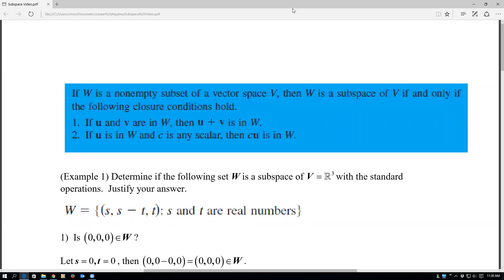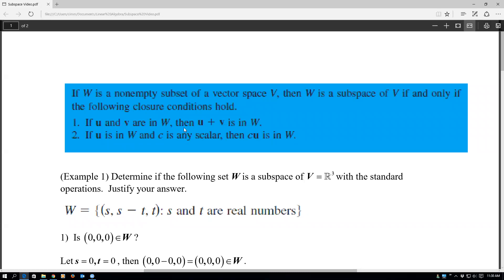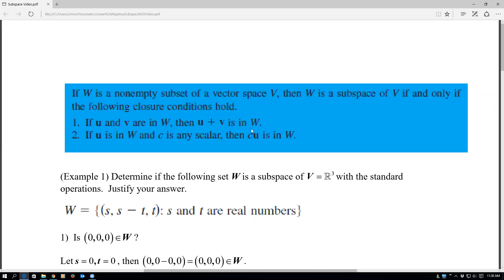So if you take two elements in the set and you add them together, and that's also in the set, then that's closure under vector addition. And if you take a vector in the set and any scalar, you multiply those together and that's in the set, then that's closure under scalar multiplication.